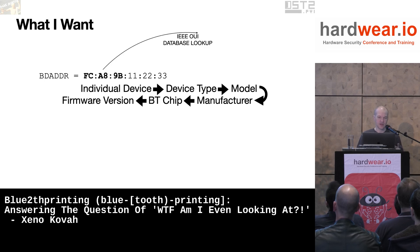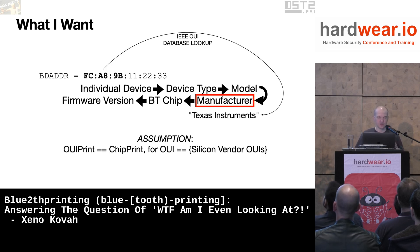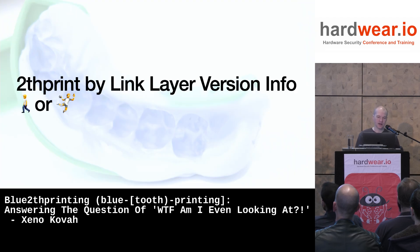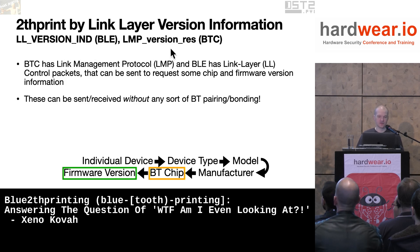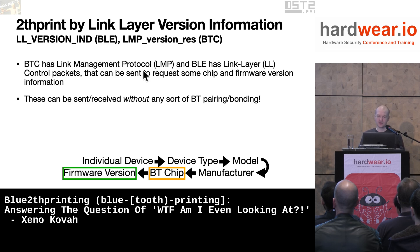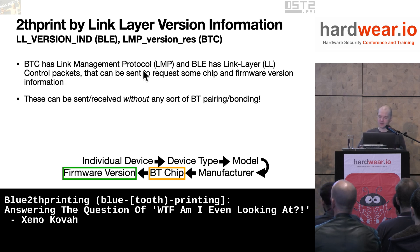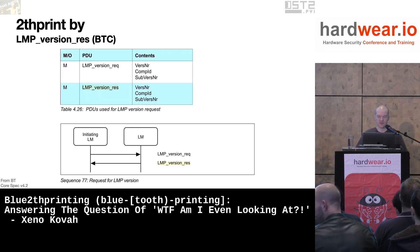OUI lookup gives us the manufacturer potentially, the chip maker, and then we can infer this is probably running something like a Texas Instruments chip. Next: link layer version information. This can be semi-passive or active. There are two types of packets — one for Bluetooth Low Energy and one for Bluetooth Classic. These are low-level link layer packets communicated well below the point at which you do any Bluetooth pairing. It all happens before you have to do any sort of authentication.